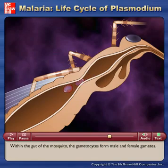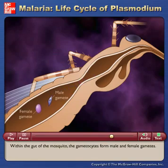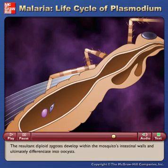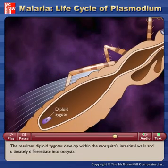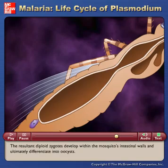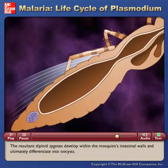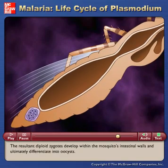Within the gut of the mosquito, the gametocytes form male and female gametes. The resultant diploid zygotes develop within the mosquito's intestinal walls and ultimately differentiate into oocysts.